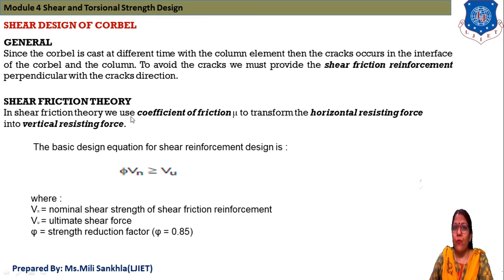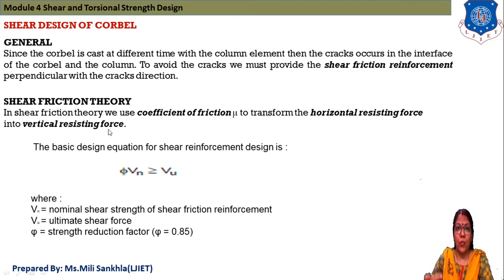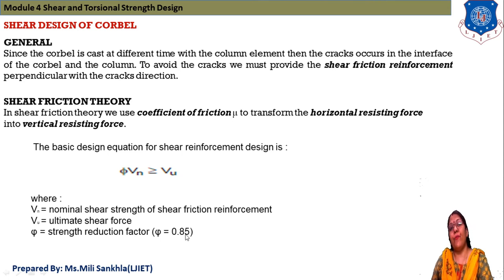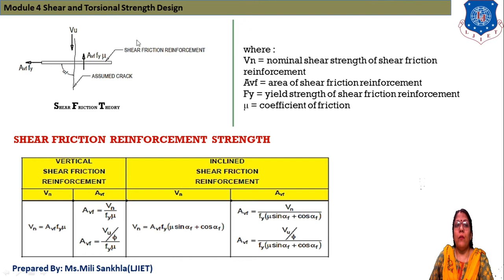In shear friction theory, we use the coefficient of friction mu to transfer the horizontal resisting force into a vertical resisting force. The basic design equation for shear reinforcement is: φVn ≥ Vu, where Vn is the nominal shear strength of shear friction reinforcement, Vu is the ultimate shear force, and φ is the strength reduction factor equal to 0.85.